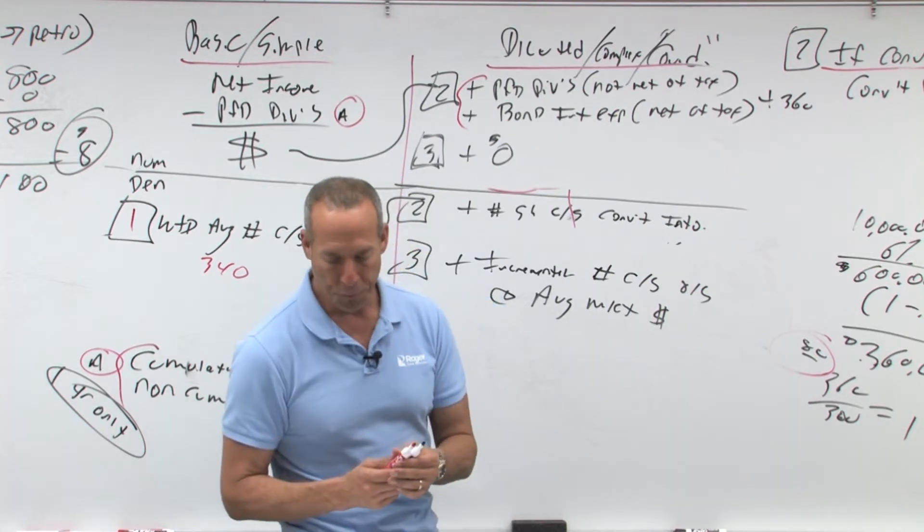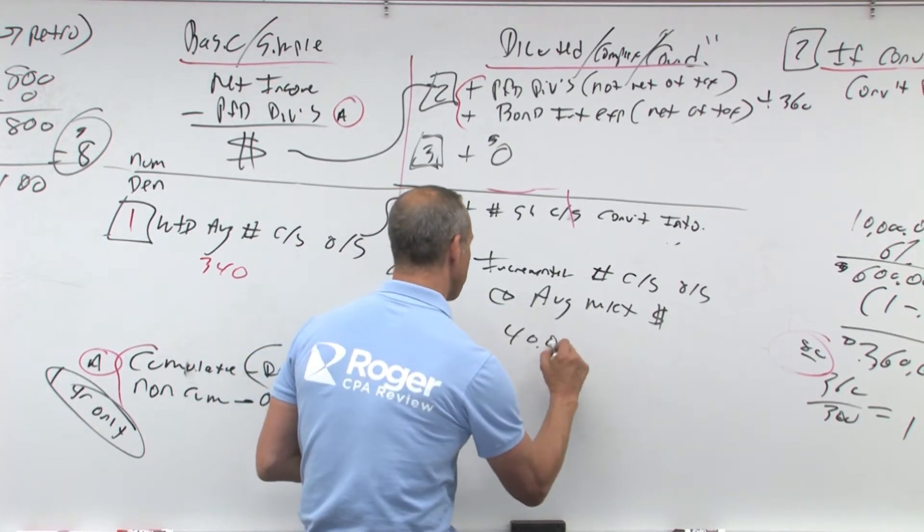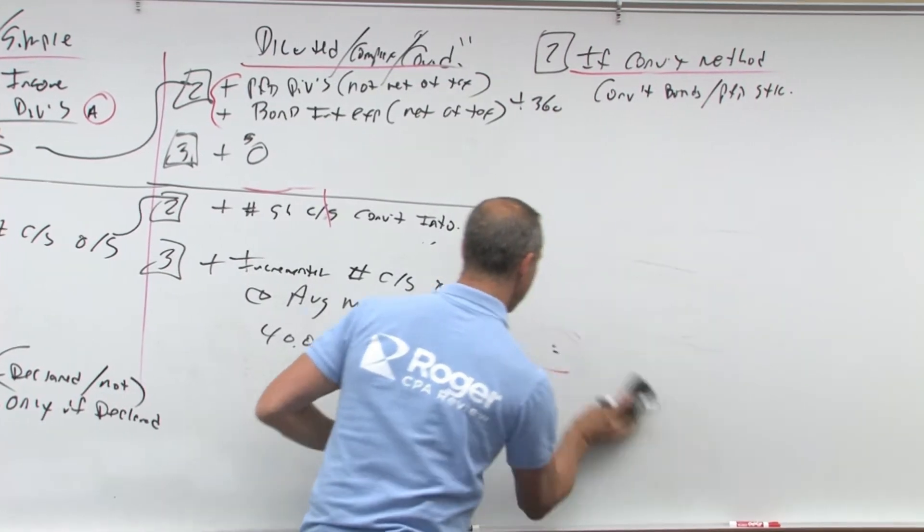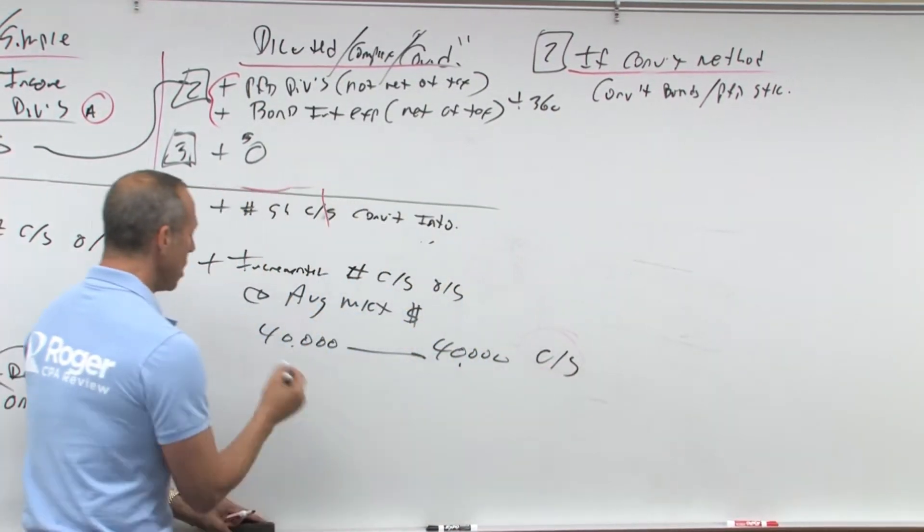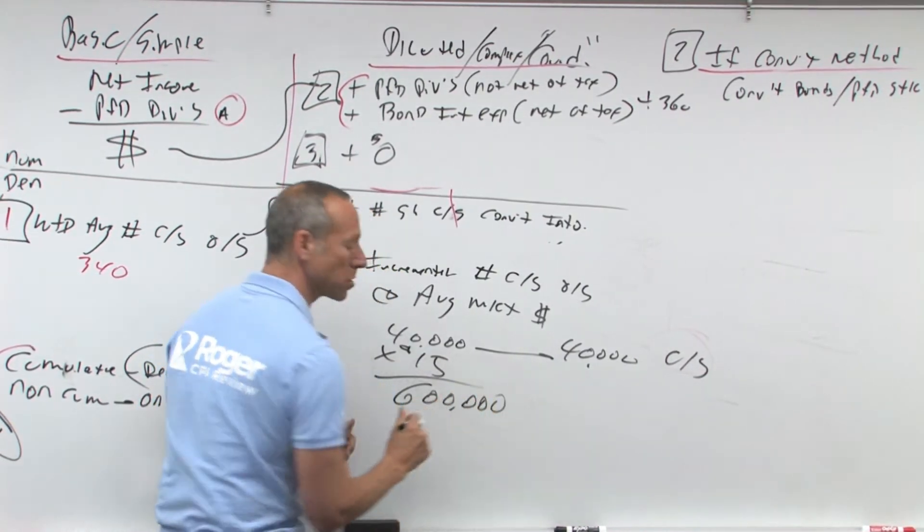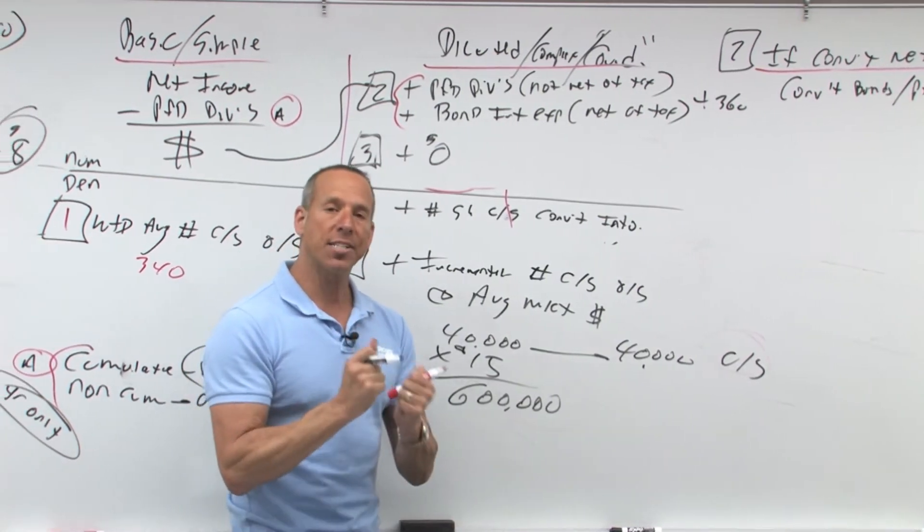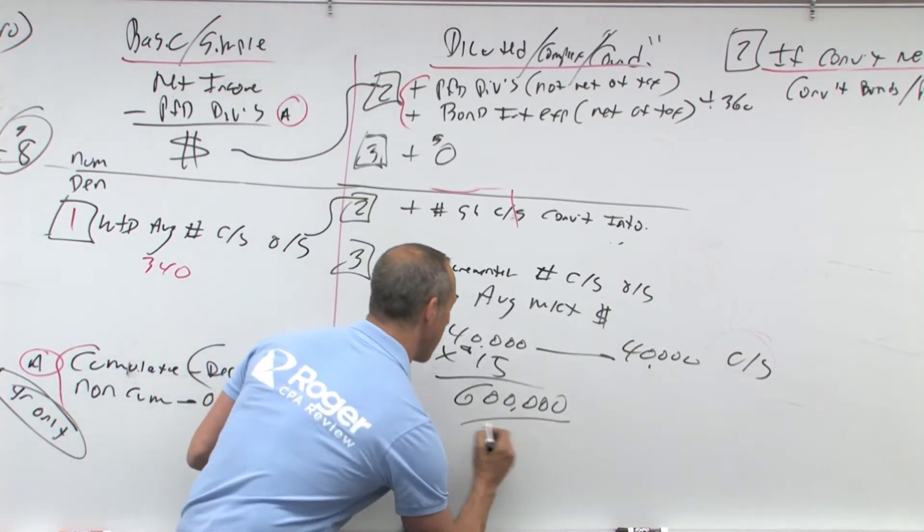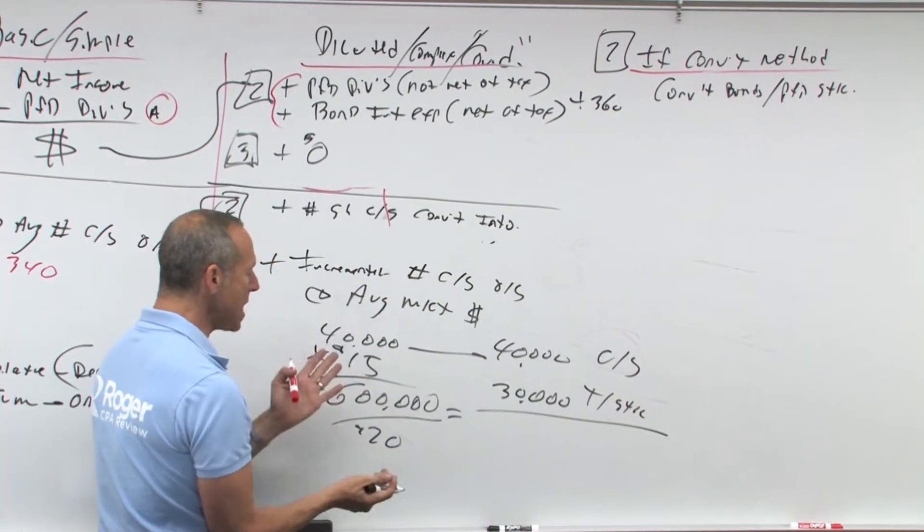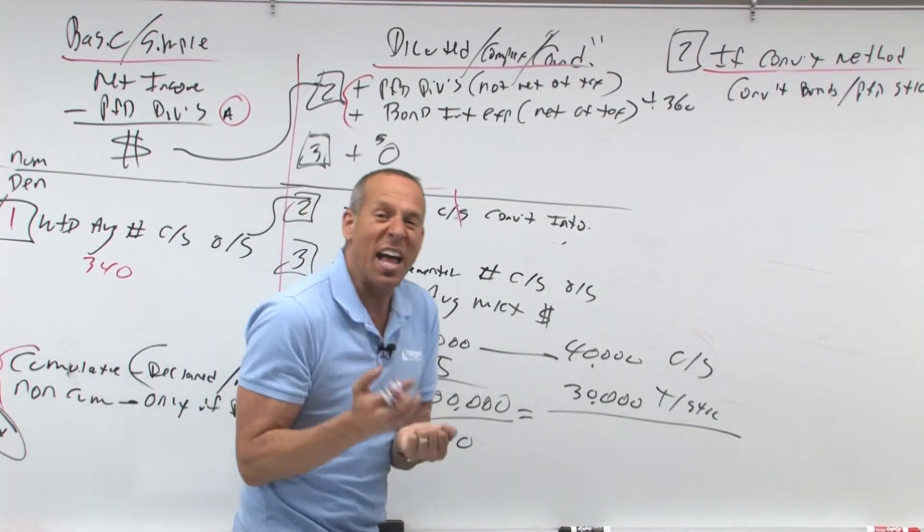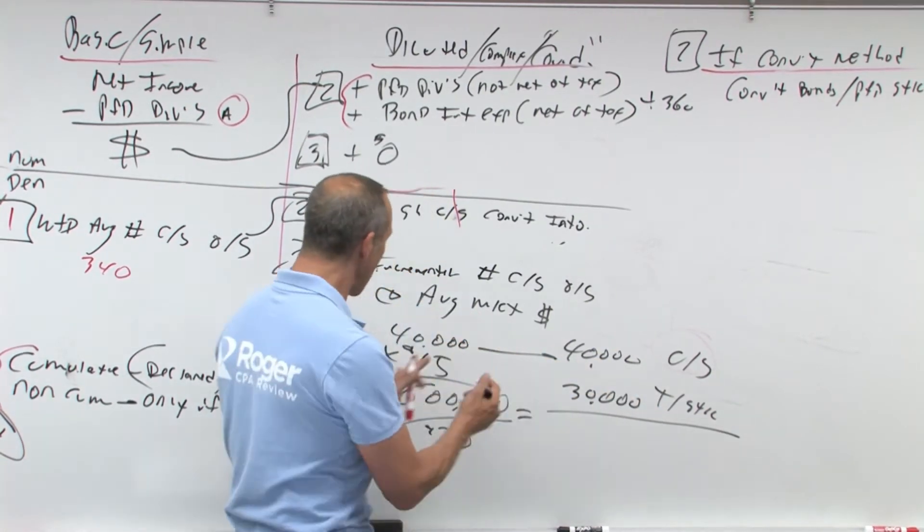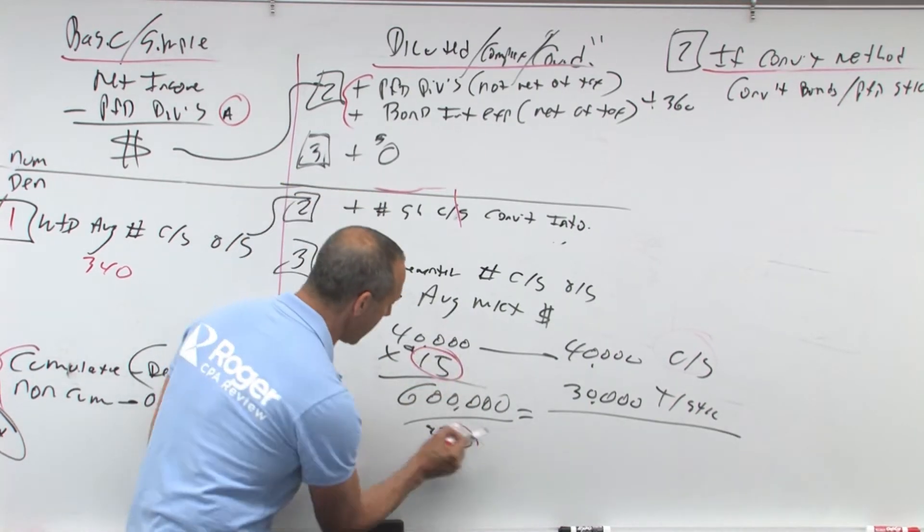So let's say, for example, I had 40,000 options. And let's say they were convertible into 40,000 shares of common stock. So you can convert those into 40,000 shares of common stock. Now you're going to give me $15 a share as the option price. You're going to give me $600,000. But you gave me $600,000, but let's say the average market price is $20 a share. That means I could only buy back 30,000 shares of treasury stock. Now notice, is it dilutive? Yeah. Because the option price is 15 and the market price is 20.